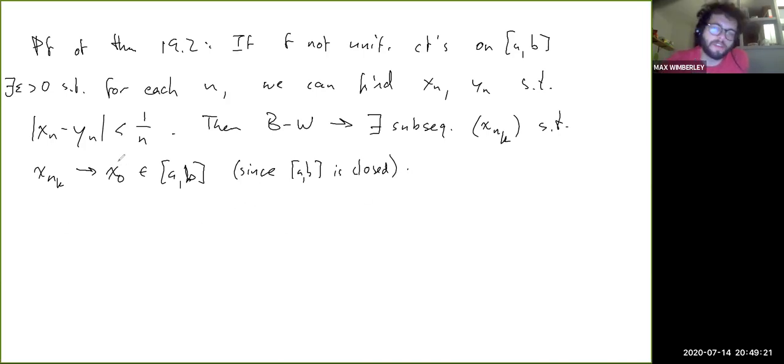Since AB is closed, this is our clustering point where stuff clusters around. We expect to be able to find some contradiction by invoking the continuity of f at x0. Basically, we should be able to say that f actually can't be continuous at x0 under these assumptions. I forgot to say: xn minus yn is less than 1 over n, but f of xn minus f of yn is greater than epsilon. That's important.